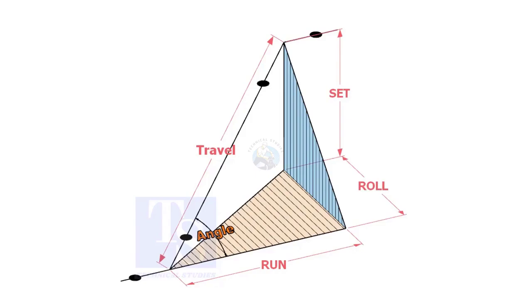In a piping drawing of a double rolled offset, usually the dimensions of the run, set and roll are given.